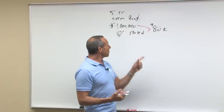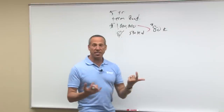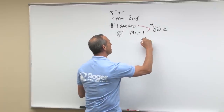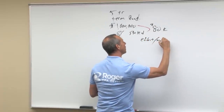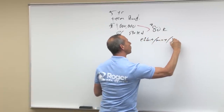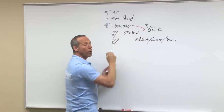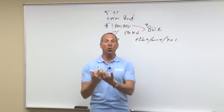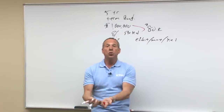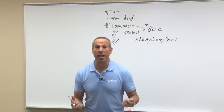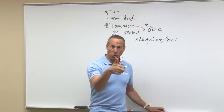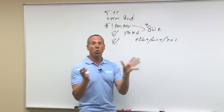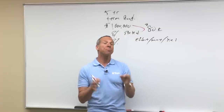In this case, the stated rate is eight percent. Let's say the effective rate — also called the market or the yield — is also eight percent. Then everything's great. That means I'm going to loan you a million, you're going to pay me eight, and I want to earn eight. When these two rates are the same, there's no discount or premium.